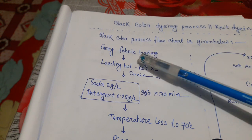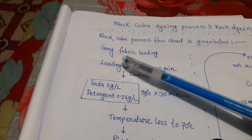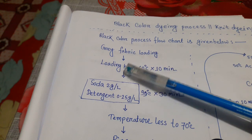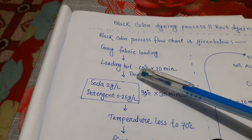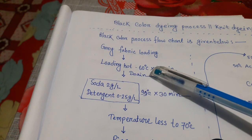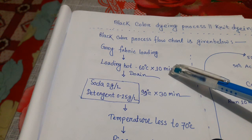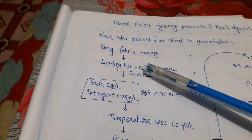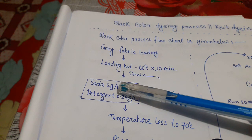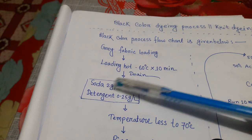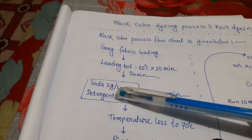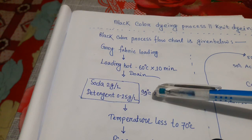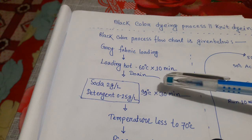First, create a fabric loading in the dyeing machine. Load hot at 60 degrees centigrade for 10 minutes, then drain. Then add scouring soda at 2 grams per liter and stabilizer at 0.25 grams per liter.